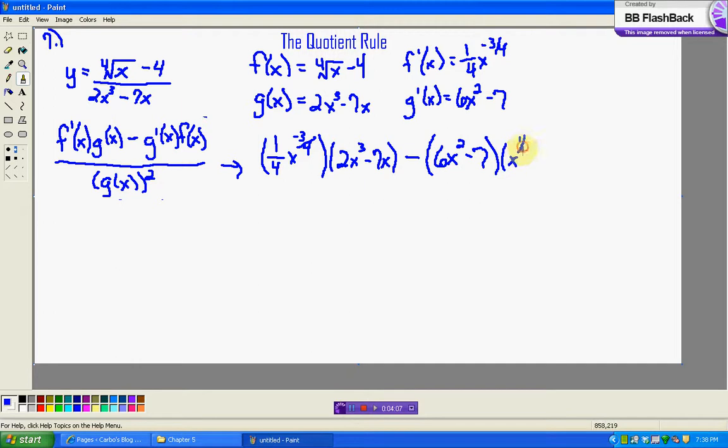So, 6x squared minus 7, and f of x is x. And now, notice, I'm going to write to the one-fourth, just because I feel like that's a little bit better. And I'm going to put that extra parenthesis, just to kind of remind you guys that we're going to distribute that negative later on. And we still need to divide by 2x cubed minus 7x squared.